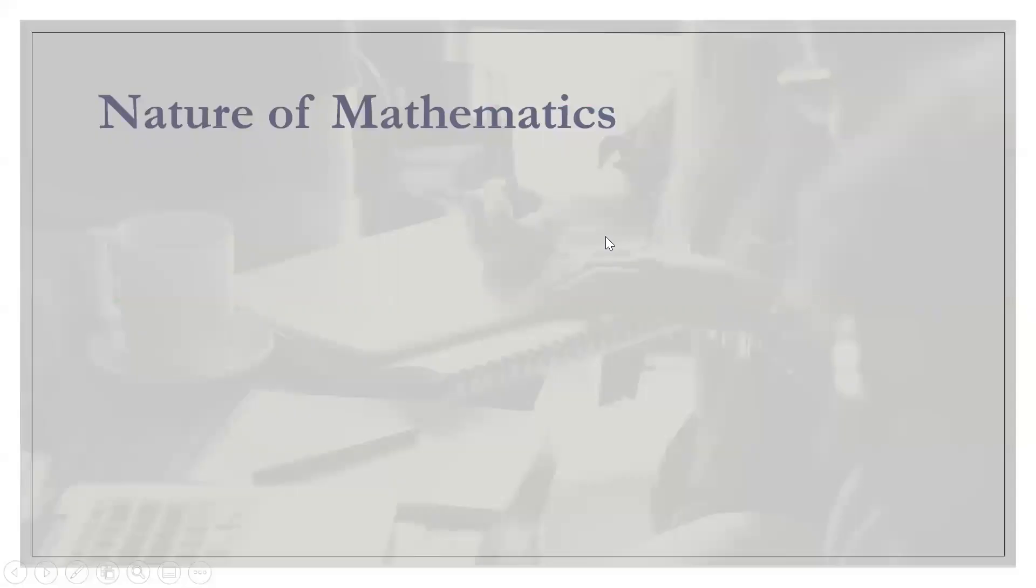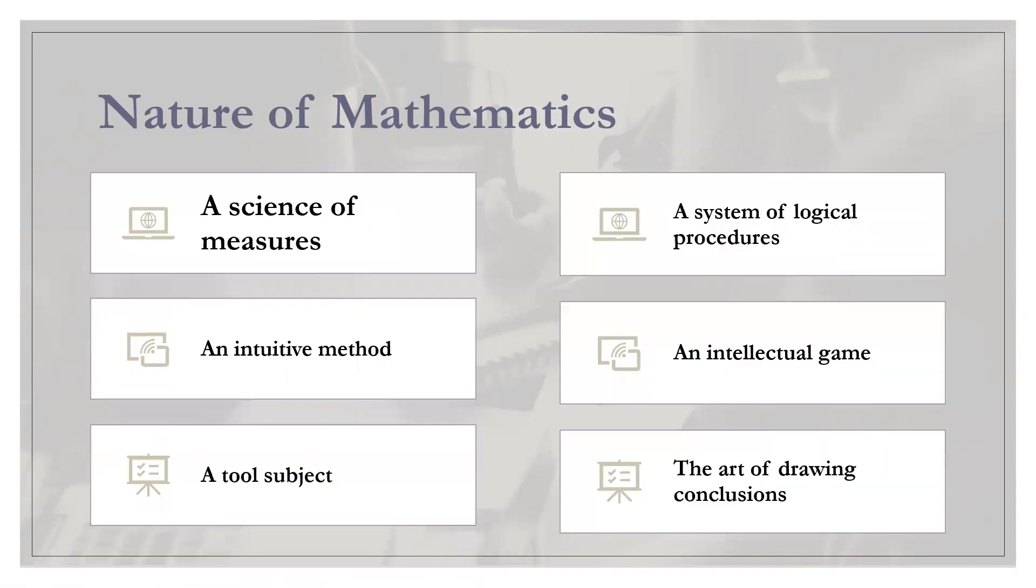Now let's talk about the nature of mathematics. There are six: a science of measures, an intuitive method, aid to the subject, a system of logical procedures, an intellectual game, and the art of drawing conclusions.